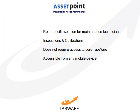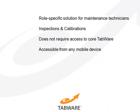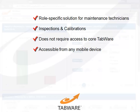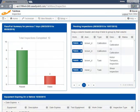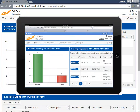Tabware Inspections, as part of Tabware Technician, is a role-specific solution for performing quantifiable inspections and calibrations to help meet regulatory requirements and industry standards, without the requirement of a seat or license for the full Tabware solution. Tabware Inspections is accessible through any browser and will automatically adjust to fit the device.